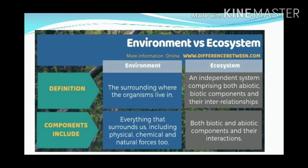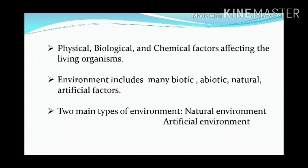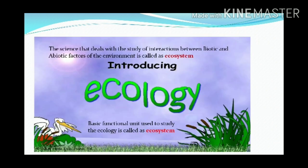The relationship between environment and ecosystem: everything that is around a living organism is called the environment. Environment is the collective term for physical, chemical, and biological factors that surround the living organism. Many biotic and abiotic, natural and artificial factors together constitute the conditions of the environment. There are two main types of environment: natural environment and artificial environment. The science that deals with the study of interactions between the biotic and abiotic factors of the environment is called ecology.